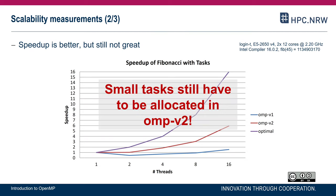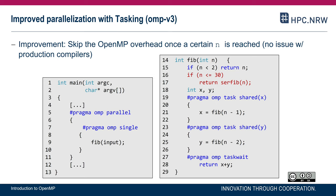What can we do further? Small tasks still have to be allocated in our current version — the IF clause avoids scheduling overhead, but it's still a task with data environment overhead. We can do the cutoff using a native if in the code. There's no OpenMP IF anymore. If n is less than or equal to 30, a function called 'serfib' is called, which you can think of as the Fibonacci code without the three OpenMP pragma lines.